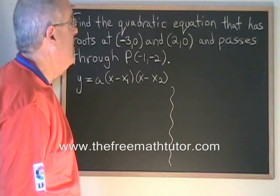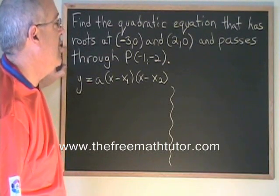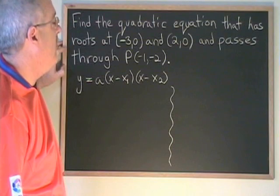In this example, we are asked to find the quadratic equation that has roots at negative 3 and 2 and passes through the point (−1, −2).